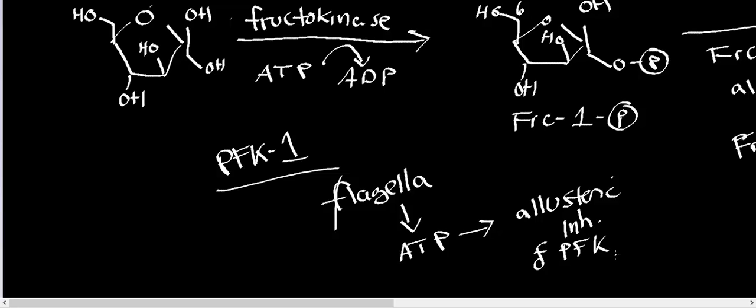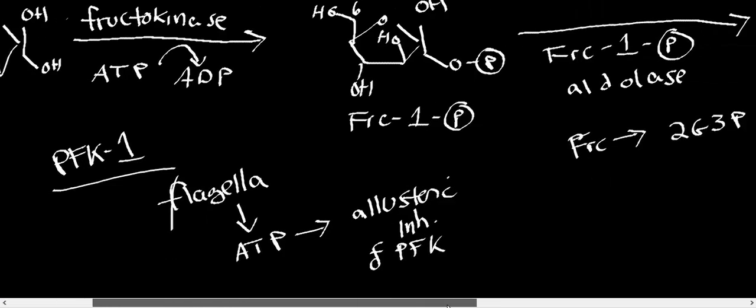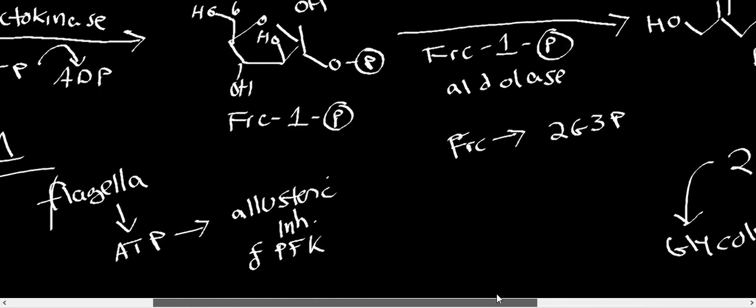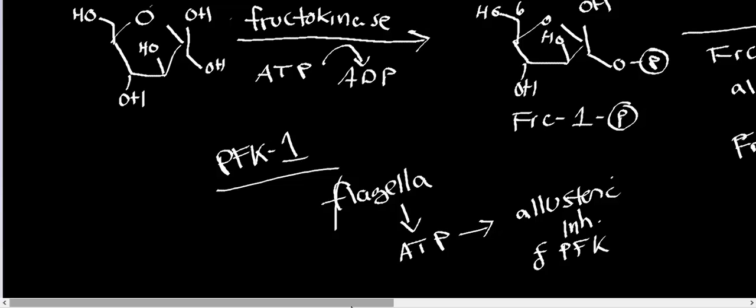And so with every ejaculation that the male does, when he ejaculates into the female, the sperm cells are migrating towards the ovum. And so the way they do that is by constantly catabolizing fructose. And the reason they use it as a fuel source is because they have to keep beating that flagella over and over again, and they consume a lot of ATP. And for every beat of the flagella, you're consuming ATP. So it makes sense to have a sugar that's not regulated by PFK, and that would be fructose.